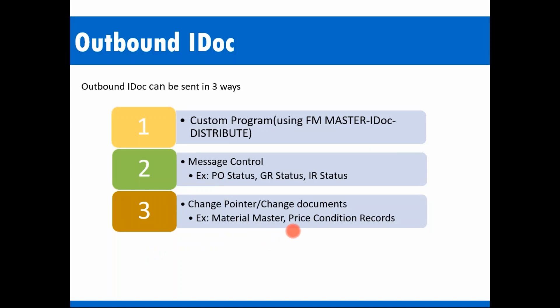Change pointers are used for change documents — for example, material master, pricing conditions, and vendor master. These objects don't have an output type. For these, there is a concept called change pointers. Almost all the configurations are similar to message control, but additionally we need to configure the change pointer settings, which I'm going to show.